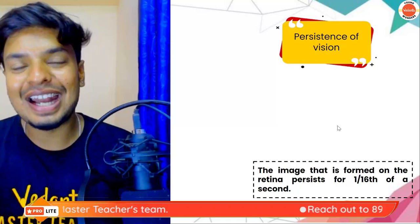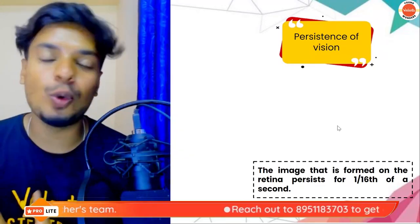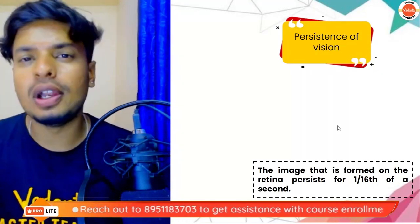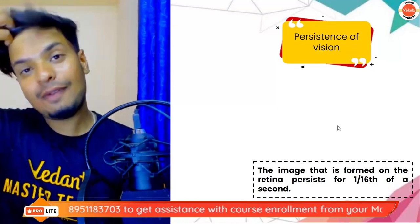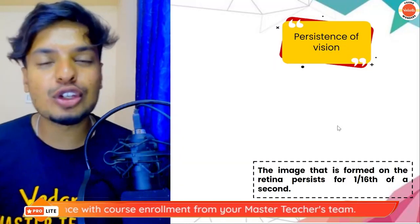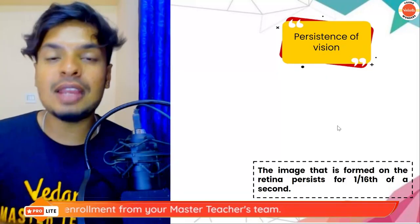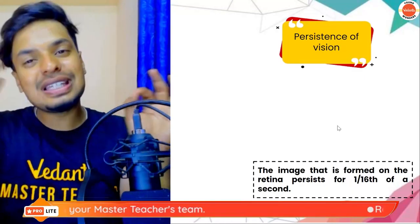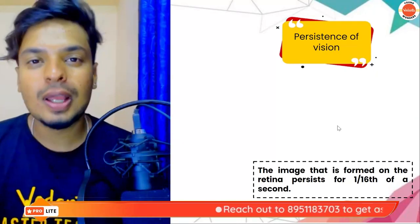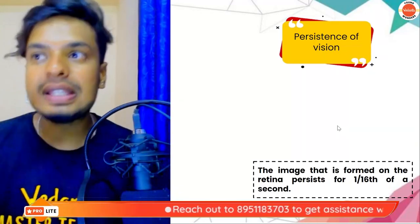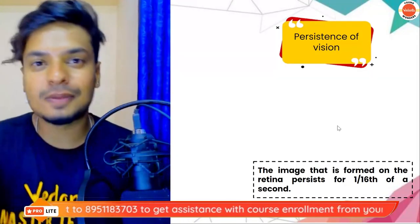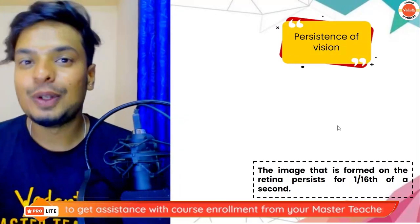The next topic is persistence of vision. The image formed on the retina doesn't disappear immediately — it persists or stays for a fraction of time: one-sixteenth of a second. This is called persistence of vision. Movies and videos are made using this principle — they flash different pictures rapidly, 24 pictures per second, creating the illusion of a moving picture.